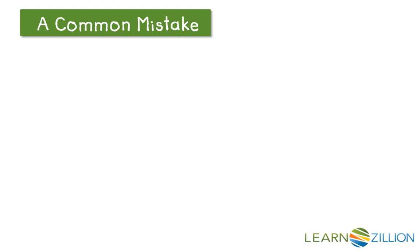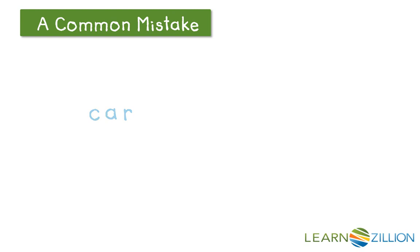So be careful with R-controlled words. In an R-controlled word, the vowel in the middle works with the R at the end to make a single sound — the R sound — like in the word 'car.' There are some other exceptions too, like the words 'low' or 'row.' These words are exceptions because the O and W at the end work together to make a single phoneme, the O sound.